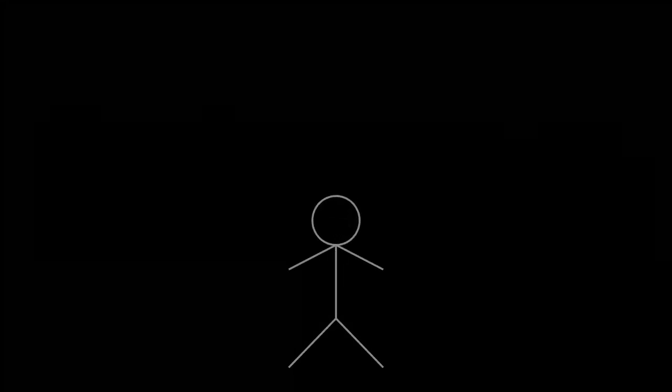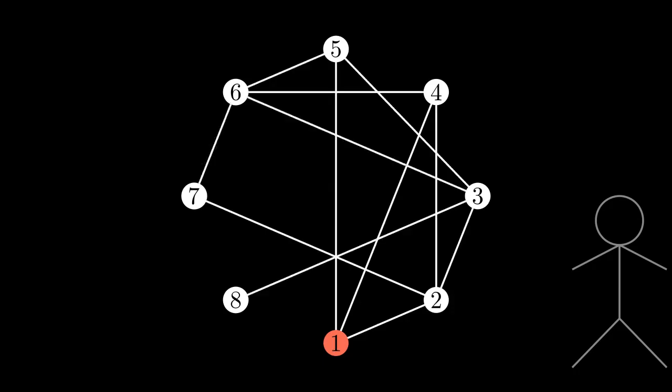Let's say we have a salesman named Bob, and he needs to make deliveries in a list of cities with the paths shown above. His company wants to save money on travelling fees, so they want to know what is the shortest possible route in which Bob can visit each city exactly once and return to his starting city.